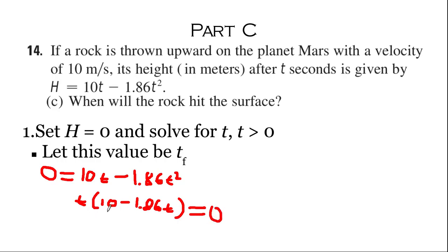Now, in order for this to be zero, one or both of these factors have to be zero. This t could be zero, but we don't want that because when t is zero, that's basically the beginning of the problem. We're trying to find the final time when the rock hits the ground.